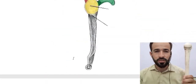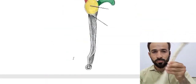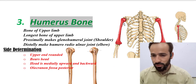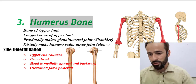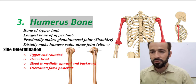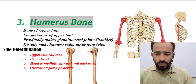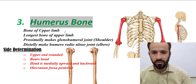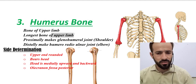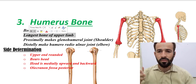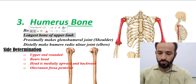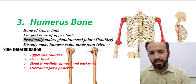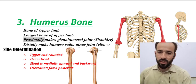Now we are discussing the anatomy of the humerus bone — the longest bone of your upper limb. You can see its position highlighted on screen. First, it is the bone of the upper limb, and it is the longest bone in the upper limb — no bone is longer than this one.